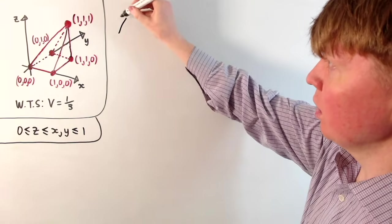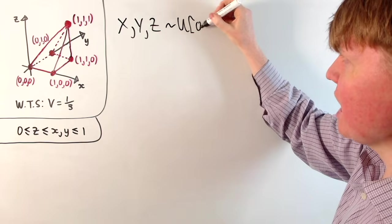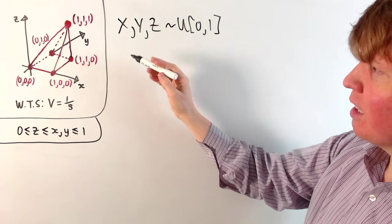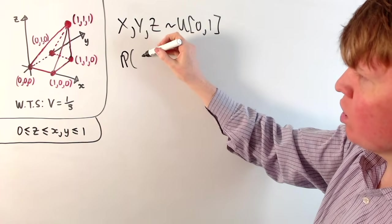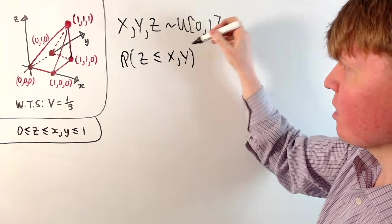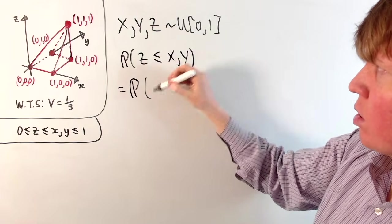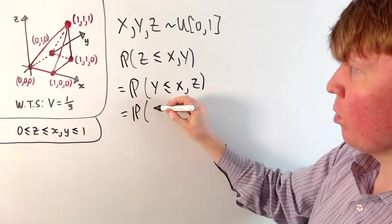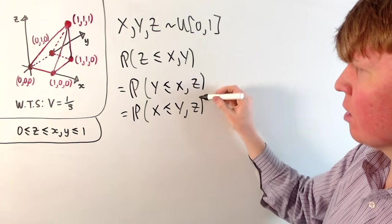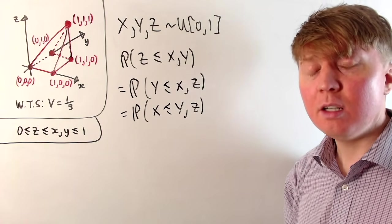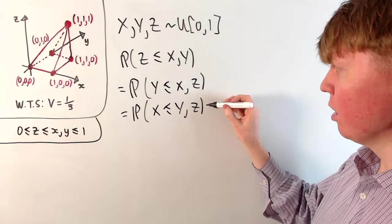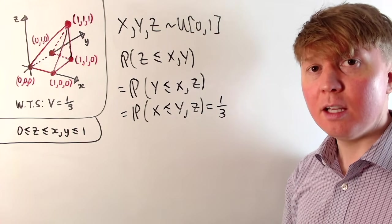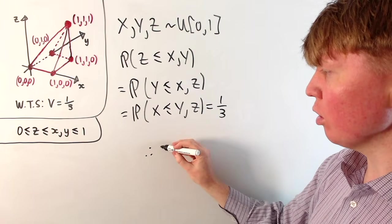We can set this up formally: x, y, and z are all independent copies of a uniform random variable on the interval [0, 1], meaning they take values between 0 and 1. We're interested in the probability that z is less than or equal to both x and y. By symmetry, since all three variables have the same distribution, this probability equals the probability that y is the smallest, and also the probability that x is the smallest. One of these three has to be the smallest, and there's nothing special about x, y, or z, so by symmetry all three probabilities must be a third.